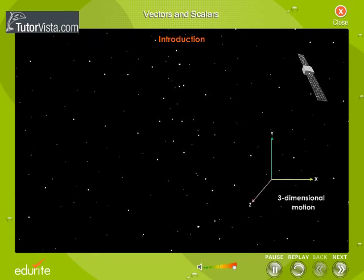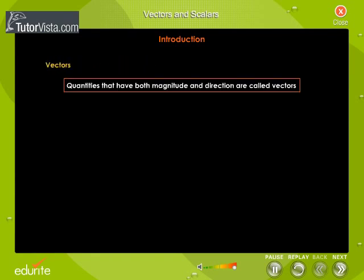Here the concept of direction becomes more important. Now there is a need to define a quantity which has both magnitude and direction. Such quantities are referred to as vectors or vector quantities. Velocity, acceleration, weight, force, momentum, etc. are vectors.